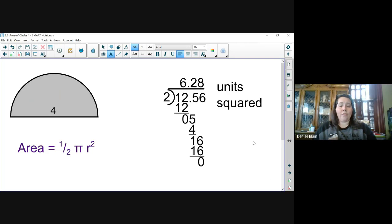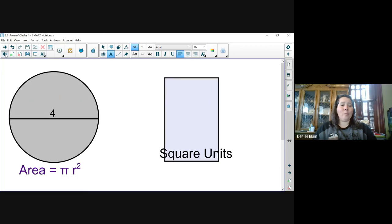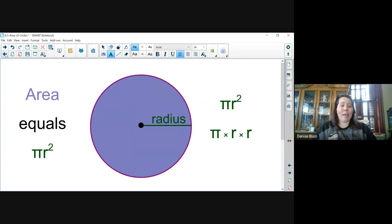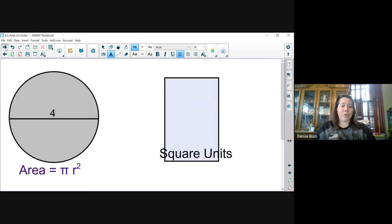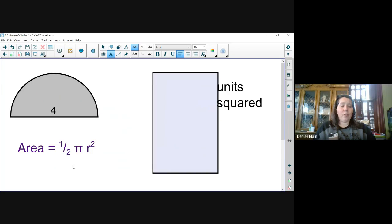And that is our final example. So to recap, to find the area of a circle, we're going to multiply pi times radius squared. And our units are going to be square units or units squared. To find the area of a semicircle, we take our area equation for a circle and divide it by two. Thank you!